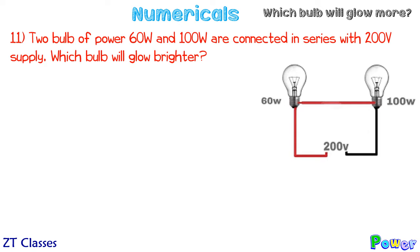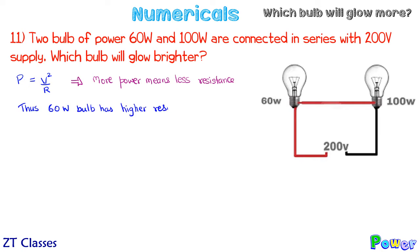These two bulbs are connected in series. Power equals V squared by R, and when voltage is constant, power is inversely proportional to resistance. So more power means less resistance. Here, the 60-watt bulb has higher resistance than the 100-watt bulb. Now with both connected in series, I want to know who will dissipate more energy — because whichever bulb dissipates more energy, its power is more and it will glow more.